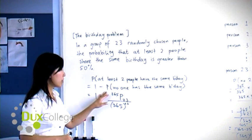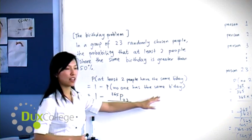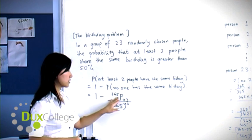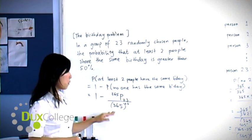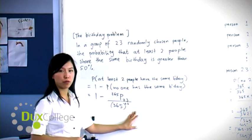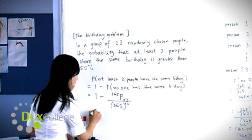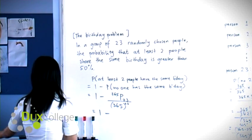So from before, we found that the probability that no one has the same birthday is equal to 365P23 over 365 to the power of 23. So let's evaluate this on our calculator.